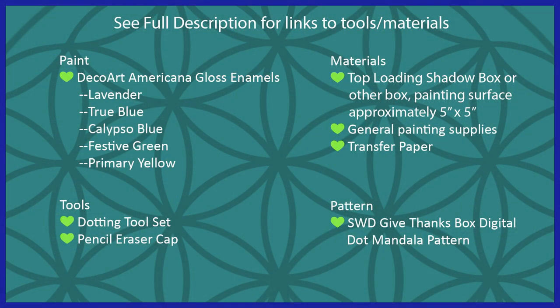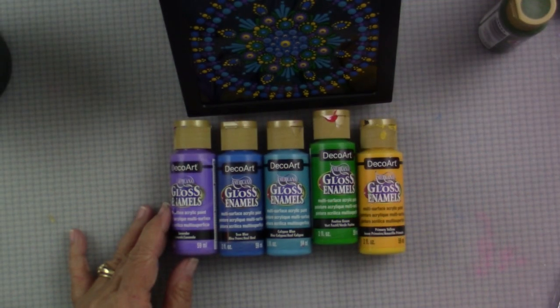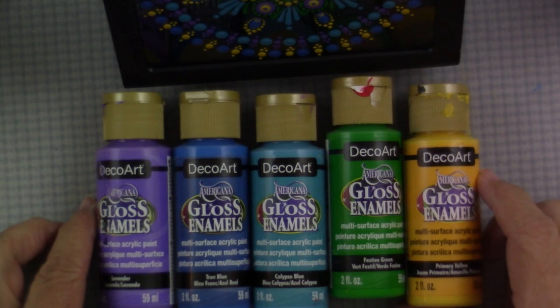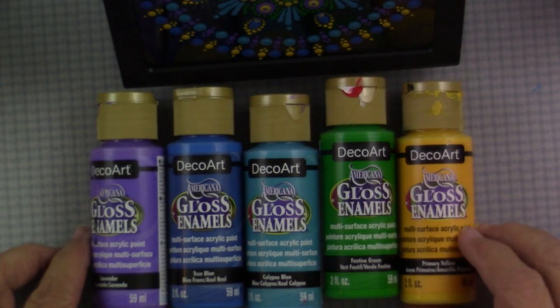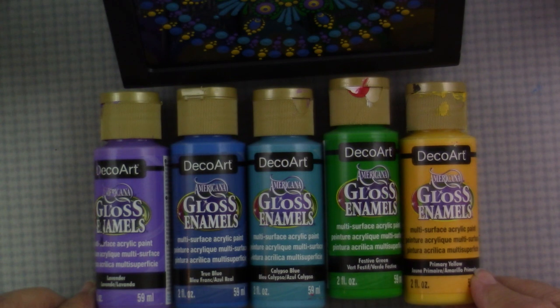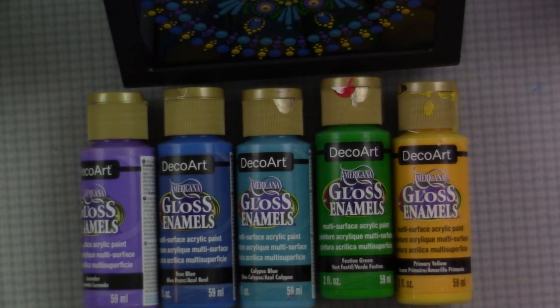Here's our full supply list. For the paints I'll be using the DecoArt gloss enamels. I'm painting on a glass surface so either the gloss enamels or a multi-surface paint is what you'll want to use. I'm using lavender, true blue, calypso blue, festive green, and primary yellow.